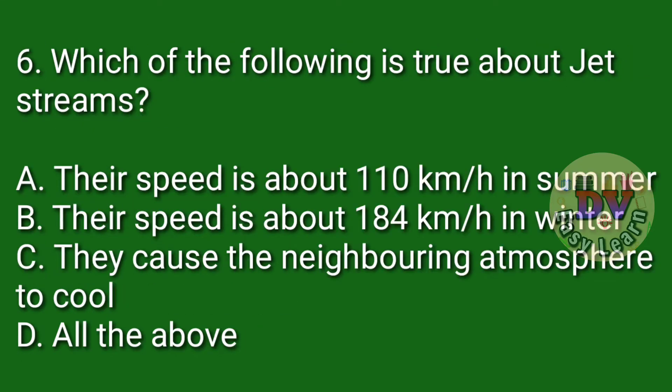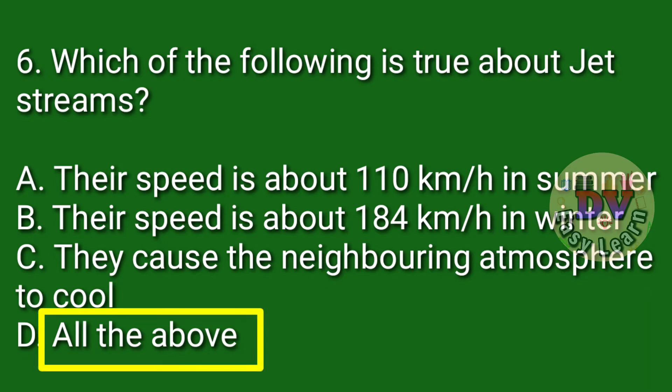Question number 6. Which of the following is true about jet streams? Correct answer: All the above. Their speed is about 110 kmph in summer; their speed is about 184 kmph in winter; and they cause the neighboring atmosphere to cool.